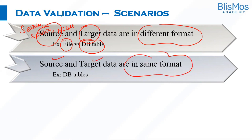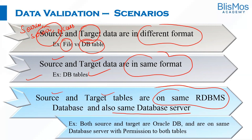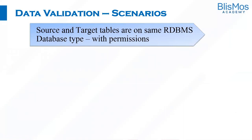The second scenario is where source and target are in the same format, like database tables. A further variation is where the source and target tables are on the same RDBMS and also the same database server. An example of this is both source and target are on the same Oracle DB and the same database server, with permission to both tables. In this scenario, the testing team has access to both sources.